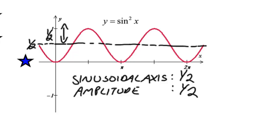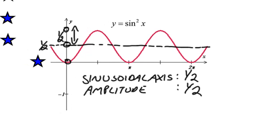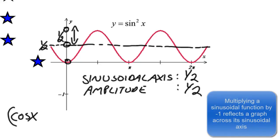Now, the function we're going to use, notice how instead of starting at a maximum or at the midpoint, like a cosine or a sine would start, this graph starts at a minimum. If we take our cosine graph, cosine of x, and we multiply by negative 1, that would flip our cosine graph across the sinusoidal axis.